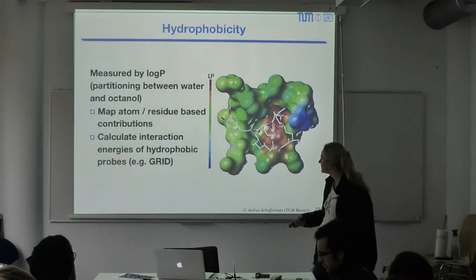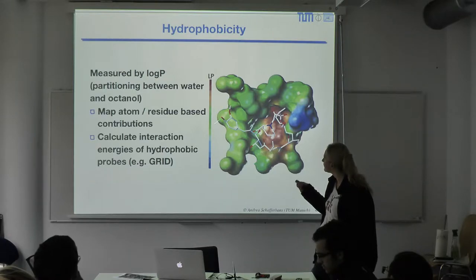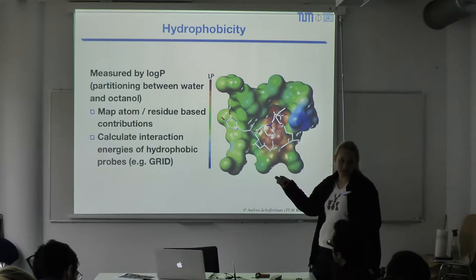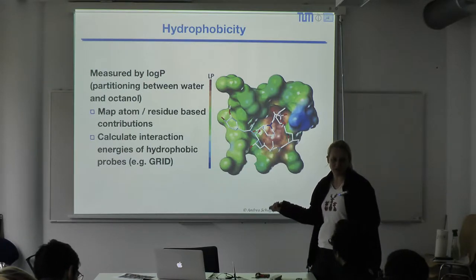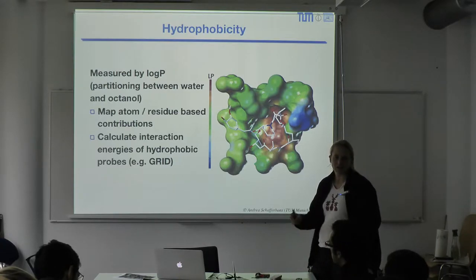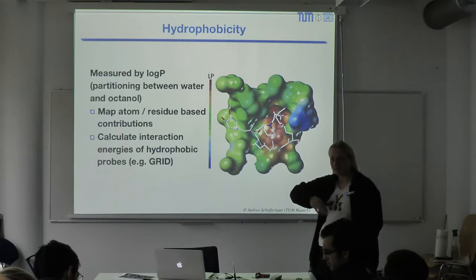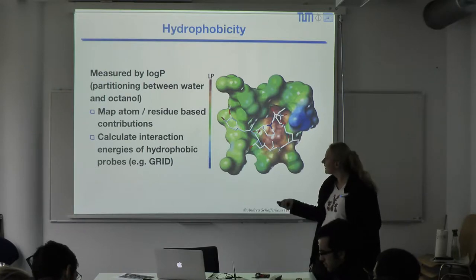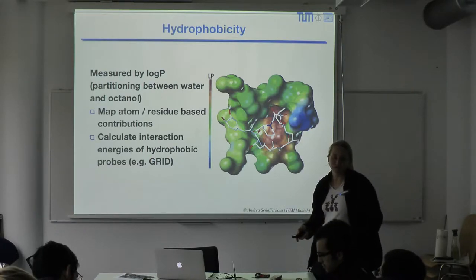Another way to map hydrophobicity is using probes as in GRID — calculating interaction energies from first principles. This contrasts with the experimental approach of mapping measured partition coefficients to functional group parameters. One comes from experiment mapped to parameters; the other comes from physical first principles.